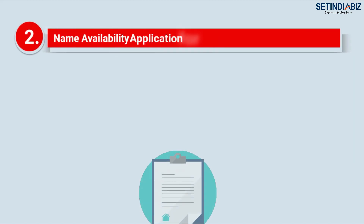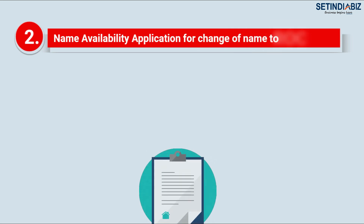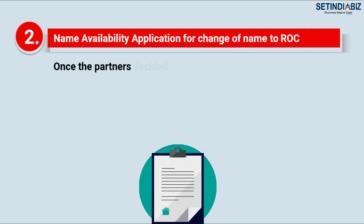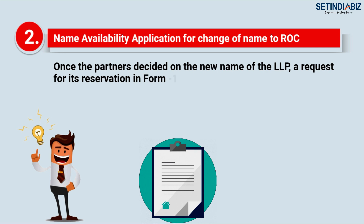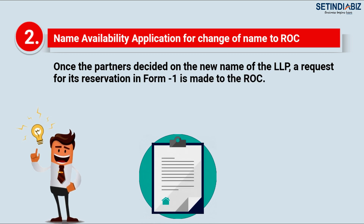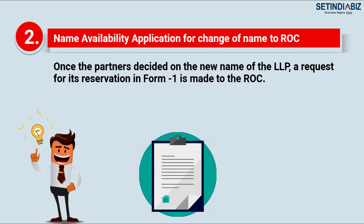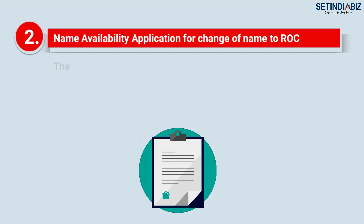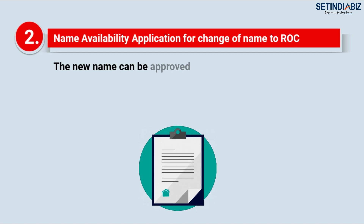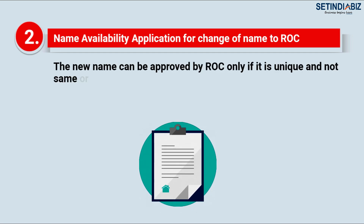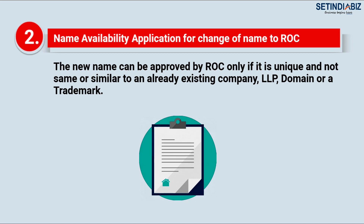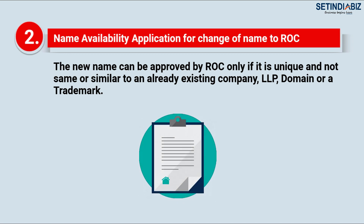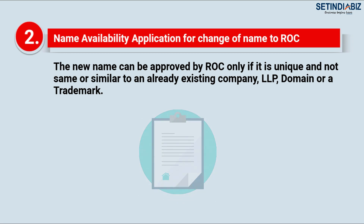Step 2: Name availability application for change of name to ROC. Once the partners have decided on the new name of the LLP, a request for its reservation in Form 1 is made to the ROC. The new name can be approved by ROC only if it is unique and not the same or similar to an already existing company, LLP, domain, or a trademark.